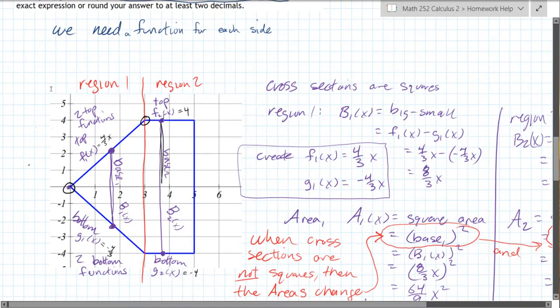So however you want to create that line, we get four thirds x, and then the bottom g1 function is negative four thirds x.